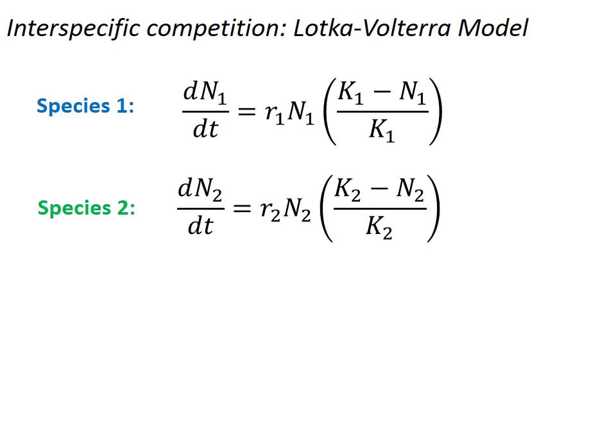However, this format now acknowledges that the values may be different between the two species, hence the 1 and the 2. So in other words, this K sub 1 is the carrying capacity of species 1, which may be different than the carrying capacity of species 2.